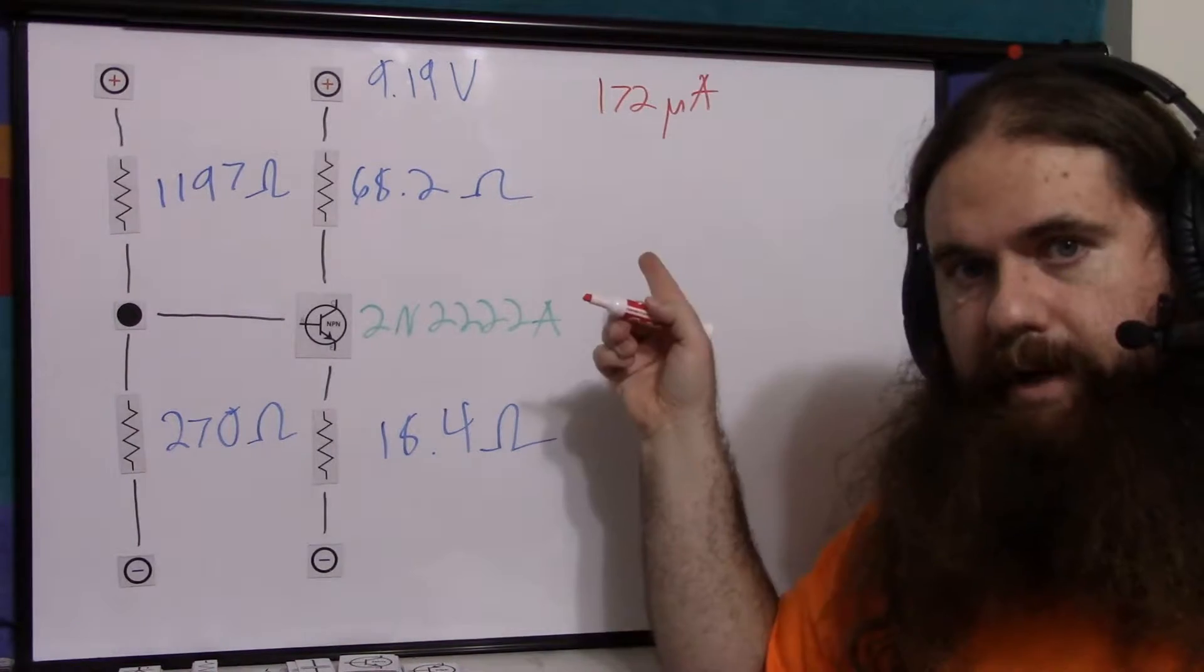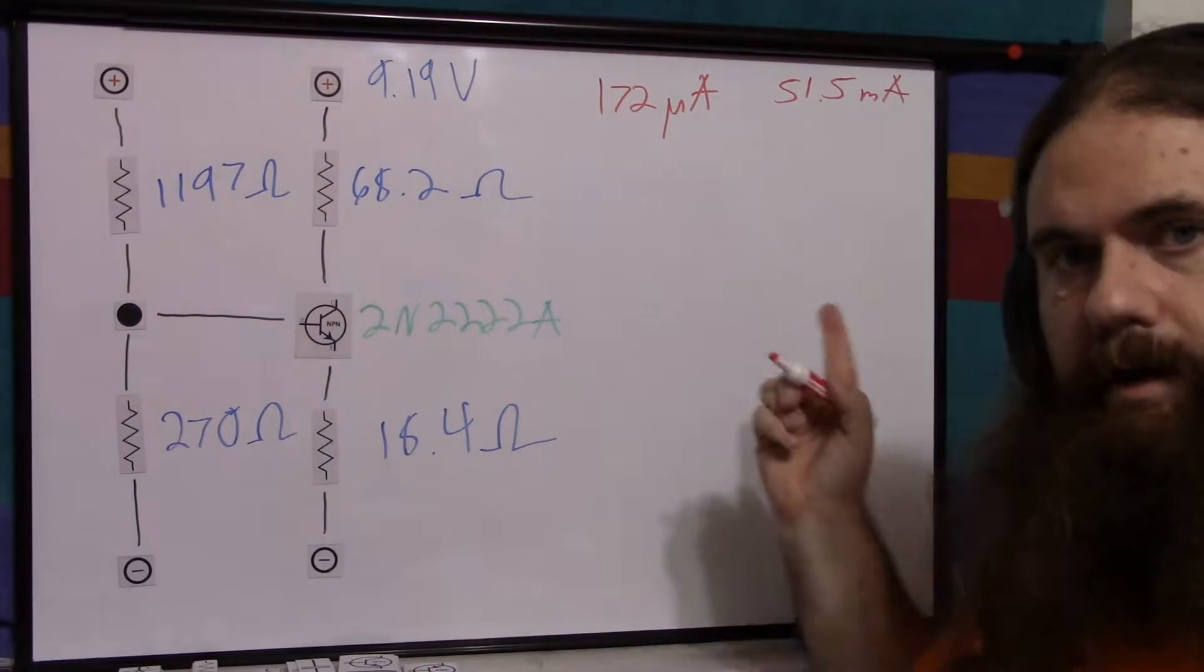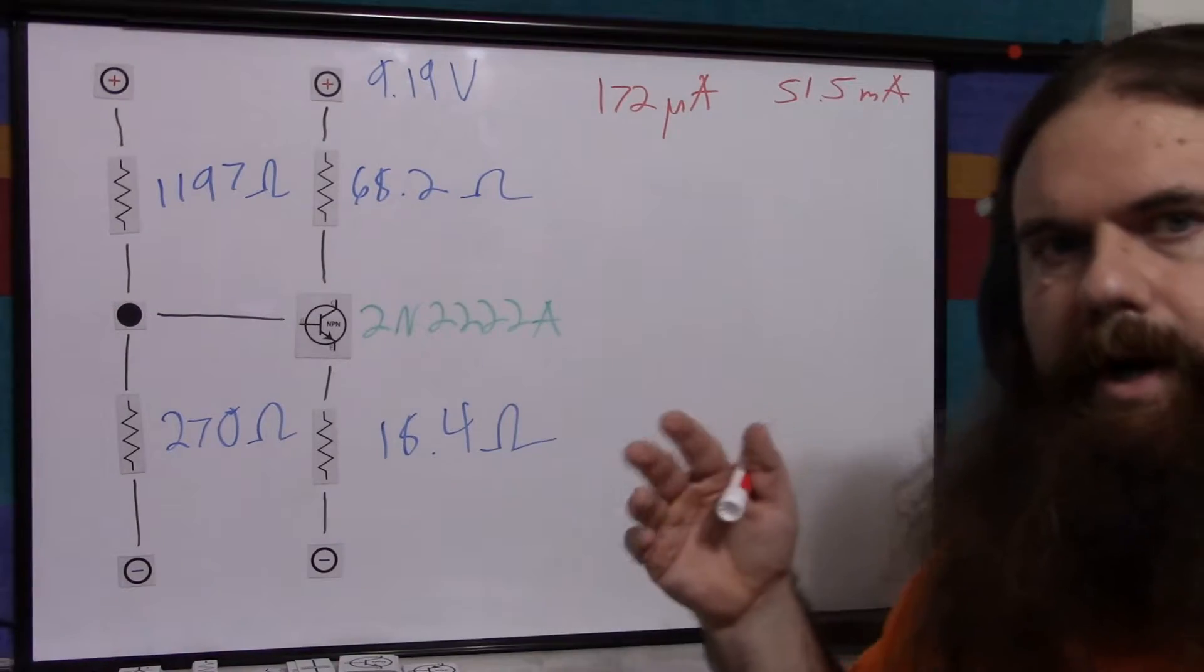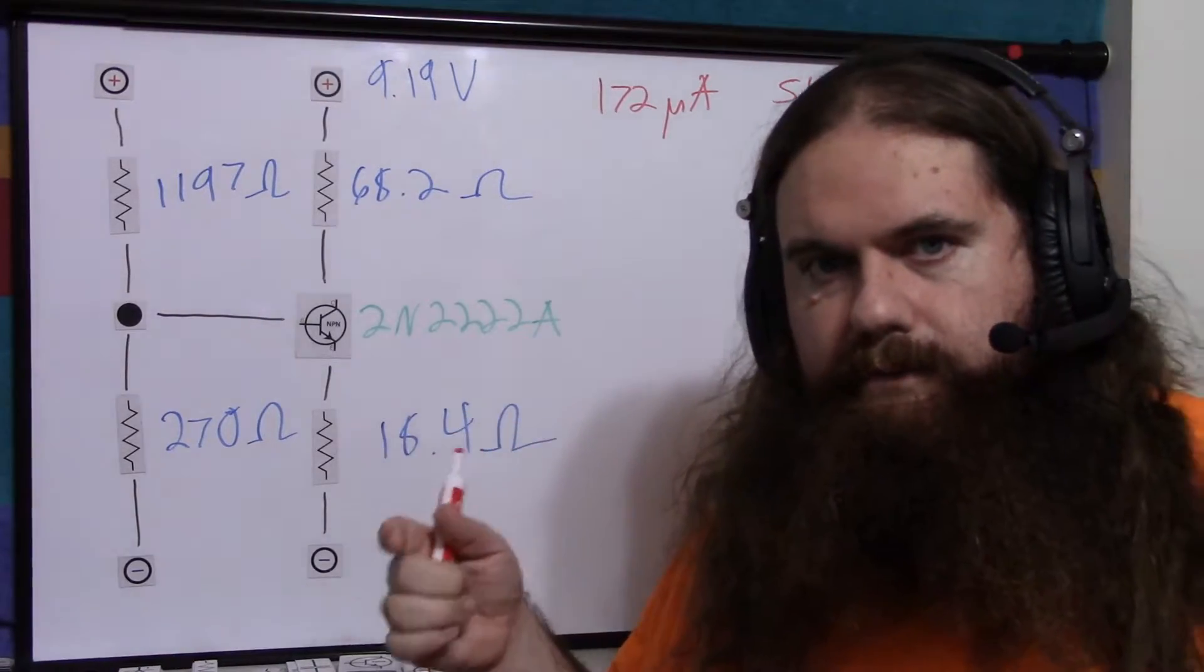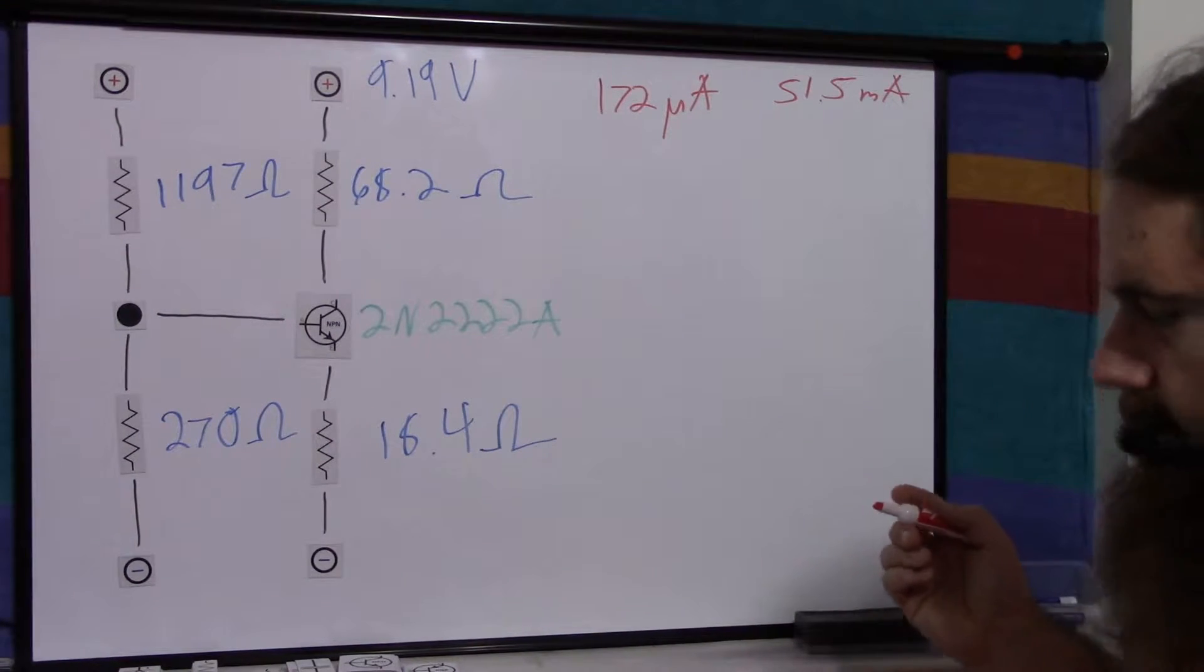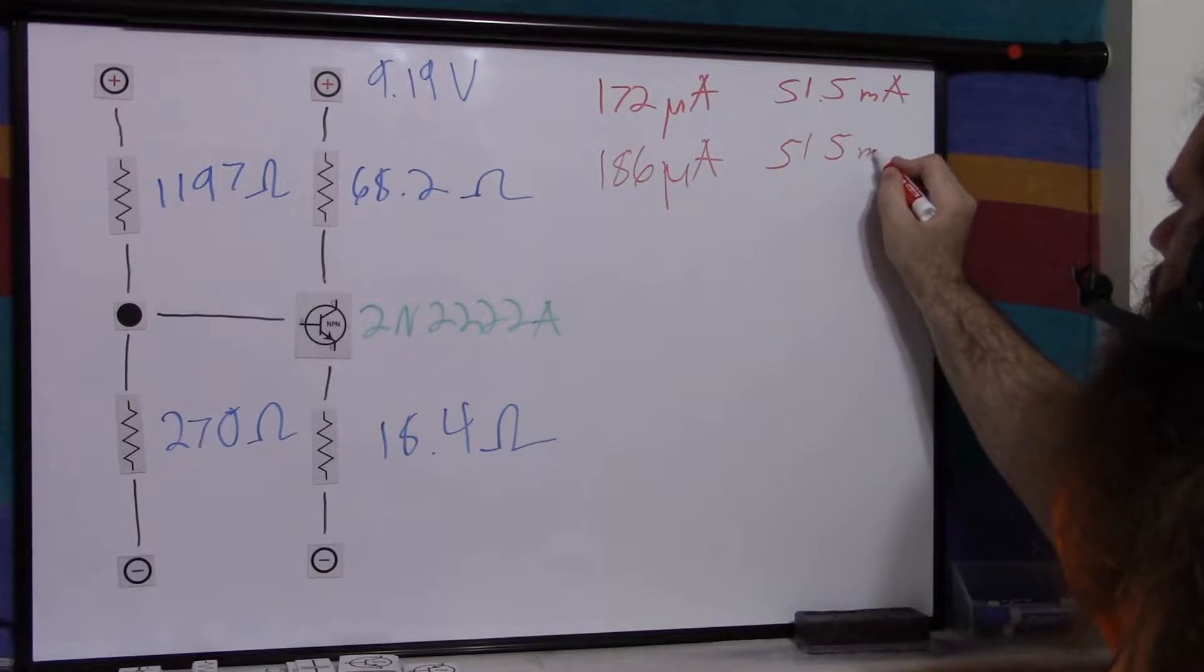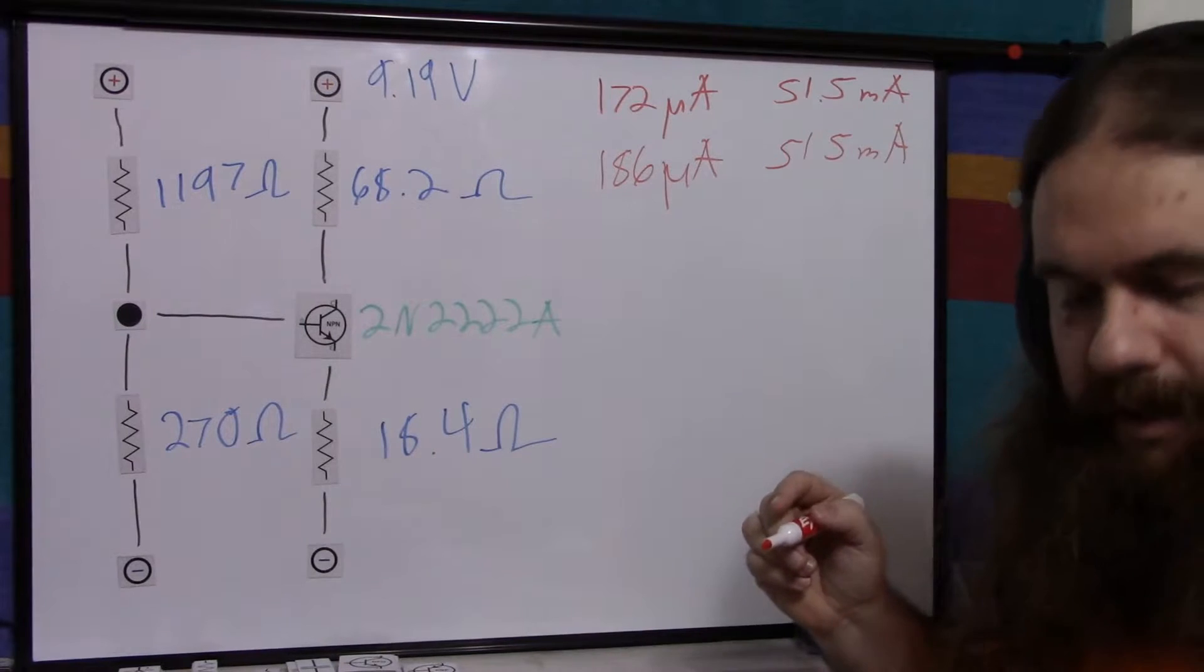172 microamps base current gave 51.5 milliamps of collector current. And remember, hooking this up to a speaker, it's all about power. So you have amperage here and then you have the voltage, which combined to be the power. That's why the speaker specifies watts rather than any sort of voltage or amperage because it's an inductive load. But basically that current. My second transistor gave me 186 microamps of base current for 51.5 milliamps of collector current. Pretty nice figure. You'll see how the base current is different, but the collector current is the same.